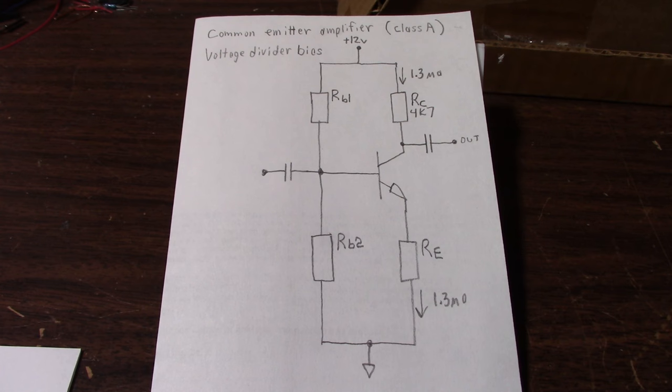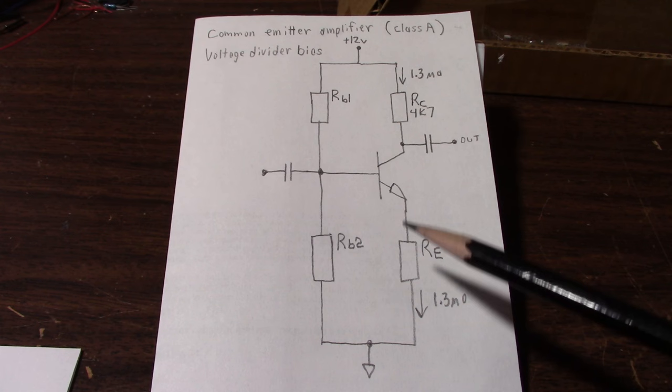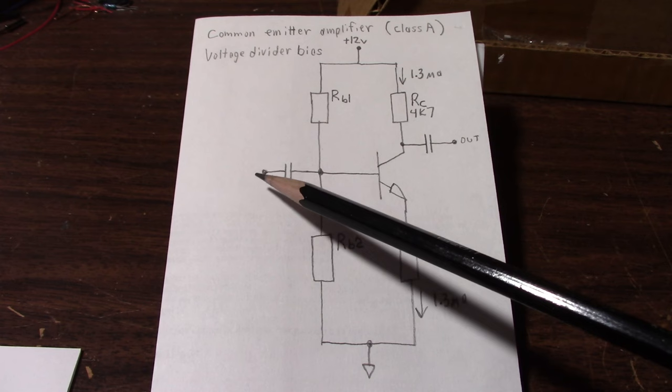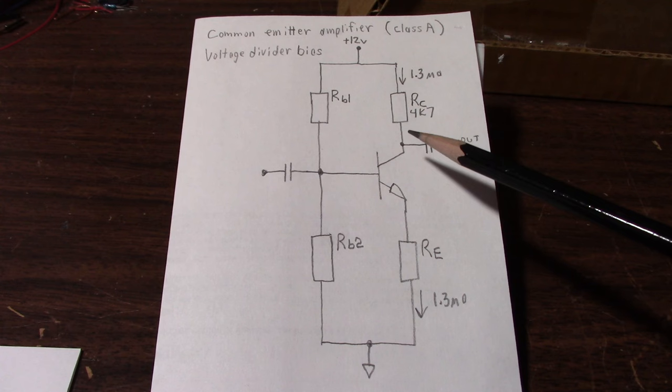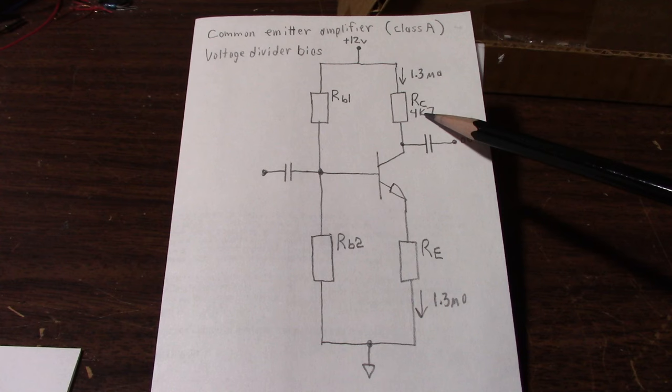Next we want to figure out the gain of the circuit. It just so happens that the gain will be the ratio of these two resistors, RC divided by RE. And I would like a gain of about 10. Let's say we put 100 millivolts in here. I want to get 1 volt out. So we need a gain of 10. Well that's quite easy because one tenth of this is 470.